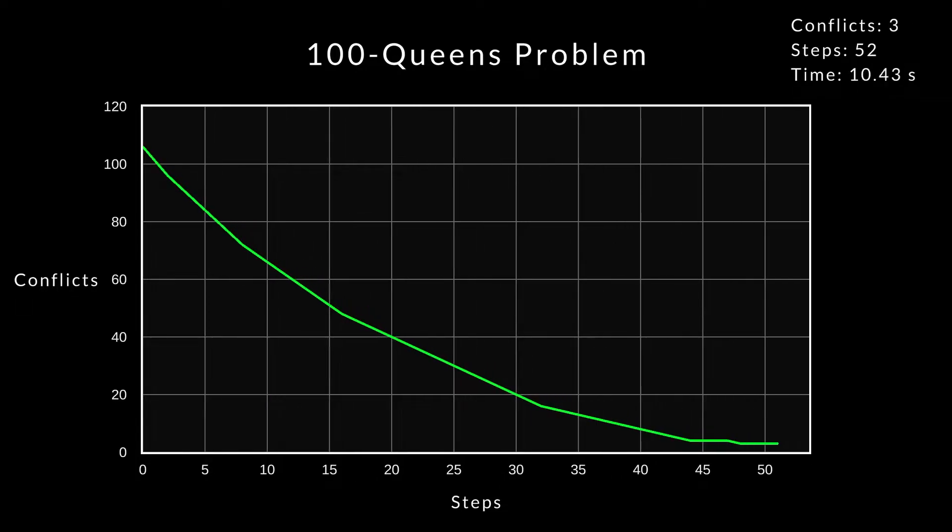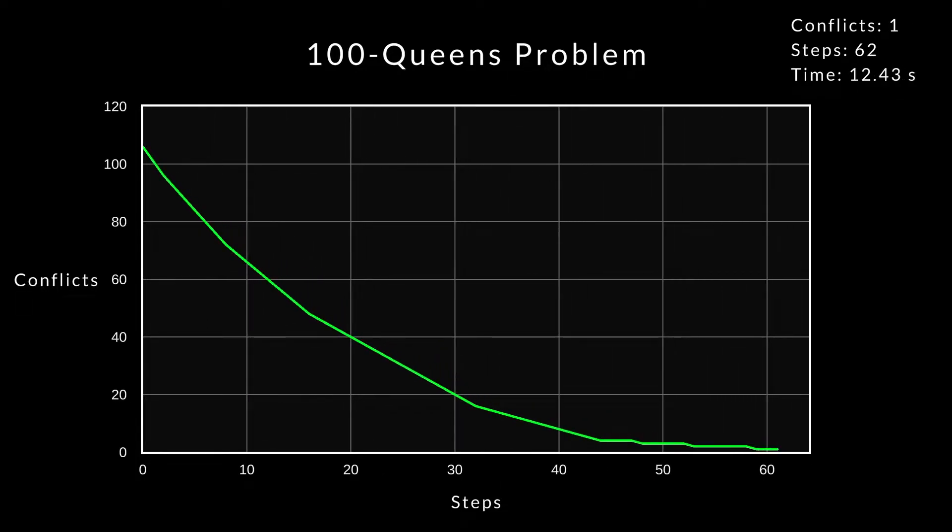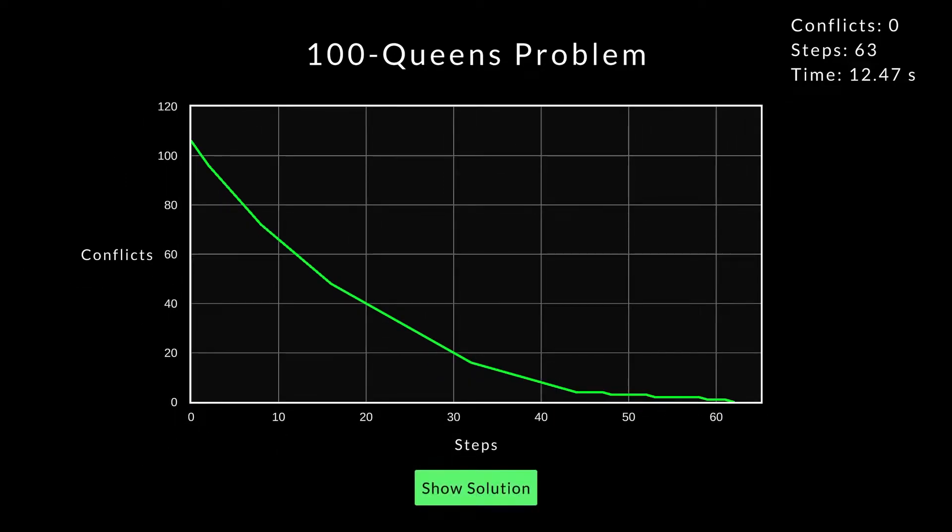The algorithm is significantly slower now, but we are still able to find the solution. Now the squares are pretty small, so I will change to this theme instead. I think it makes it slightly easier to see what's going on.